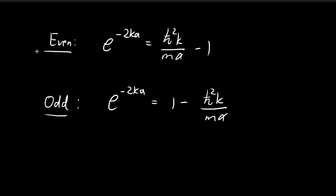We're very close to the end of this problem, so let's briefly recap what has happened so far. We were dealing with the double Dirac delta potential well, looking for solutions where ξ is an even function and where ξ is an odd function. We found that the constant k for the even case satisfies one equation, and for the odd case, k satisfies a different equation. Our goal is to find the allowed energy levels that the double Dirac delta potential would admit.